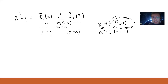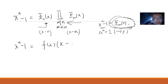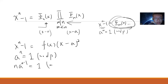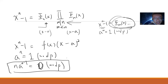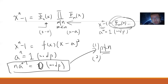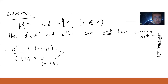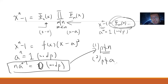Then x^n - 1 can be written as f(x)·(x - a)^2, which means a^n ≡ 1 mod p and the derivative is also 0 mod p — that is, n·a^{n-1} ≡ 0 mod p — because a is a multiple root. But we know p does not divide n by assumption, and p does not divide a because a^m ≡ 1 mod p implies p does not divide a. So n·a^{n-1} cannot be 0 mod p — contradiction.